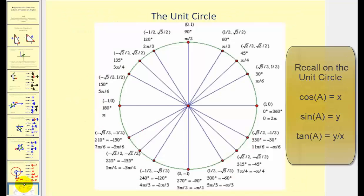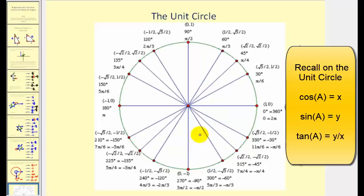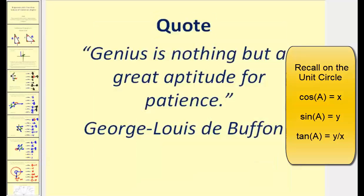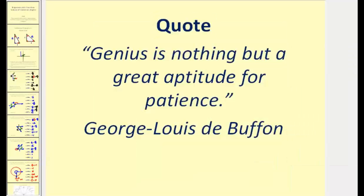Lastly, the unit circle shows the points that form all of the most common reference angles — thirty, forty-five, sixty degrees — in all four quadrants. You should probably have one of these handy, because it can speed up the process of finding trigonometric function values of the most common angles. We went over quite a bit of information here, but hopefully you found it helpful. Have a good day.